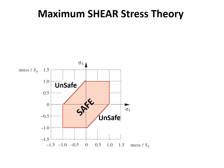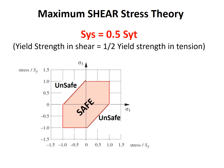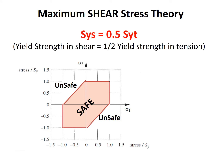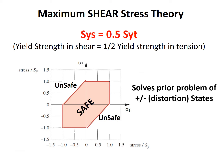The next theory is the maximum shear stress theory. This states that the yield strength in shear equals one half of the yield strength in tension. This envelope takes care of the problem we had before, with the unsafe portions now addressed. The factor of safety for the maximum shear stress theory is the yield strength divided by the quantity principal stress 1 minus principal stress 3.